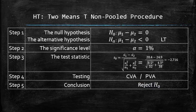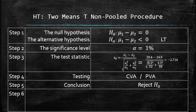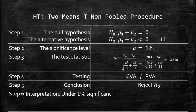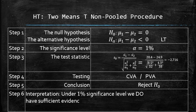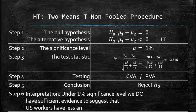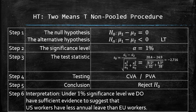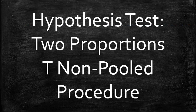Next, we interpret the results. Under the 1% significance level, we do have sufficient evidence to suggest that United States workers have less annual leave than European Union workers. This concludes how to apply the two-means t non-pooled procedure to test a statistical claim about two population means when the population standard deviations are unknown and assumed not equal.